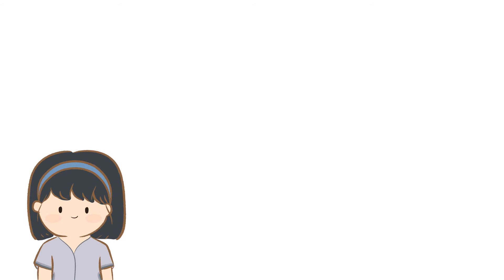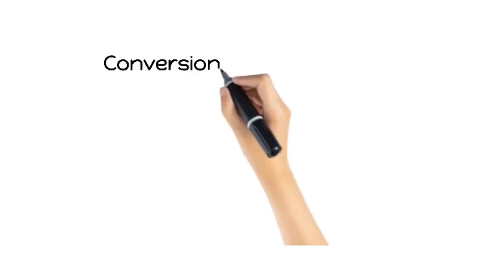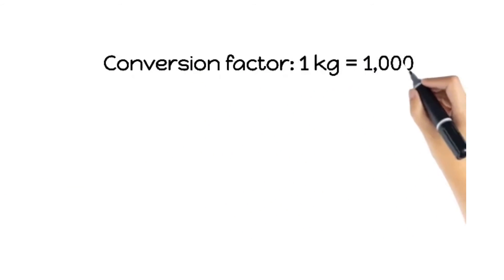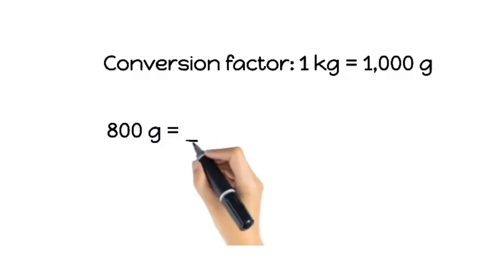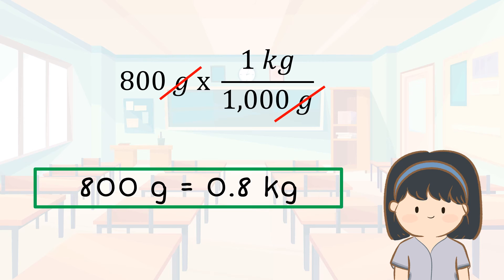Moving on to mass, let's say you have a mass in grams, but you need it in kilograms. The conversion factor is 1 kilogram equals 1,000 grams. Now, you can switch between grams and kilograms effortlessly.